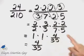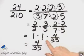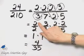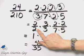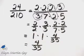To simplify, we are essentially removing factors of 1, and those factors of 1 are represented by the same number on top in the numerator as in the denominator. So we've simplified, and in simplest form, it is 4 over 35.